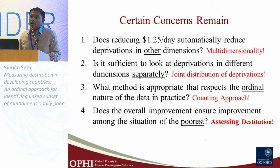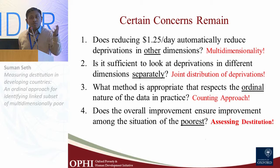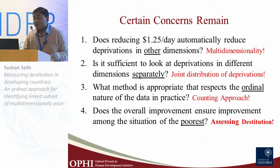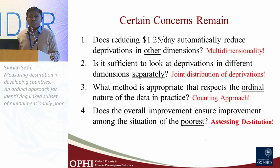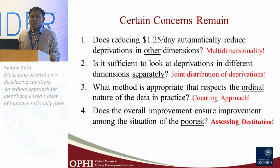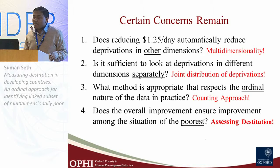For example, for sanitation you have categories like flush toilets and open defecation — but what is the distance between those categories? Are they the same as assumed in some other measures? Probably not. And finally: does overall improvement ensure improvement in the situation of the poorest? These are all valid concerns.